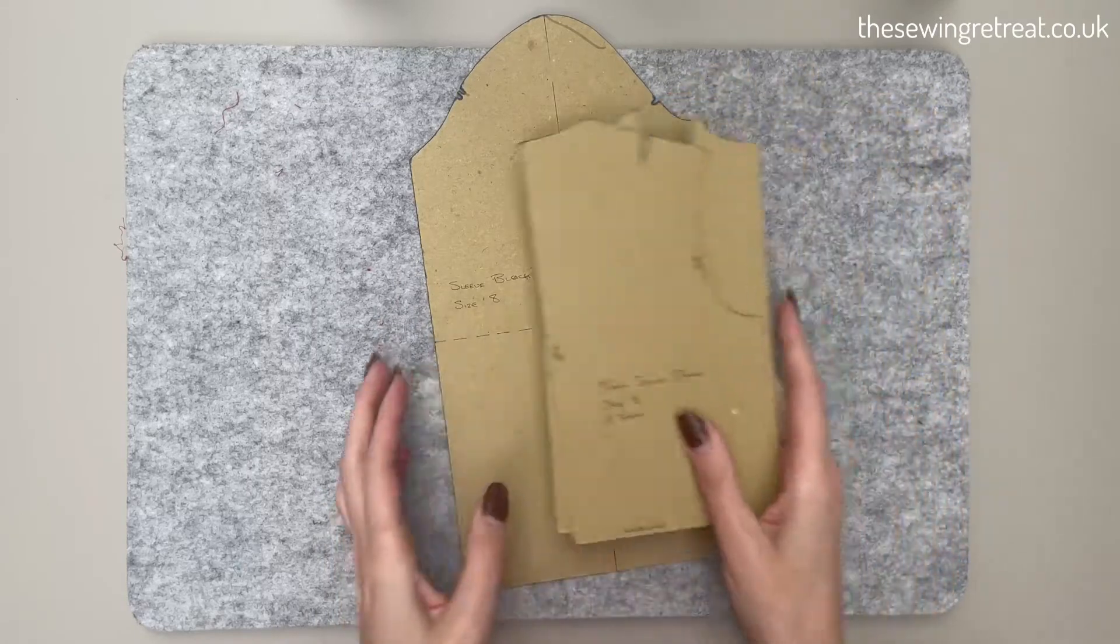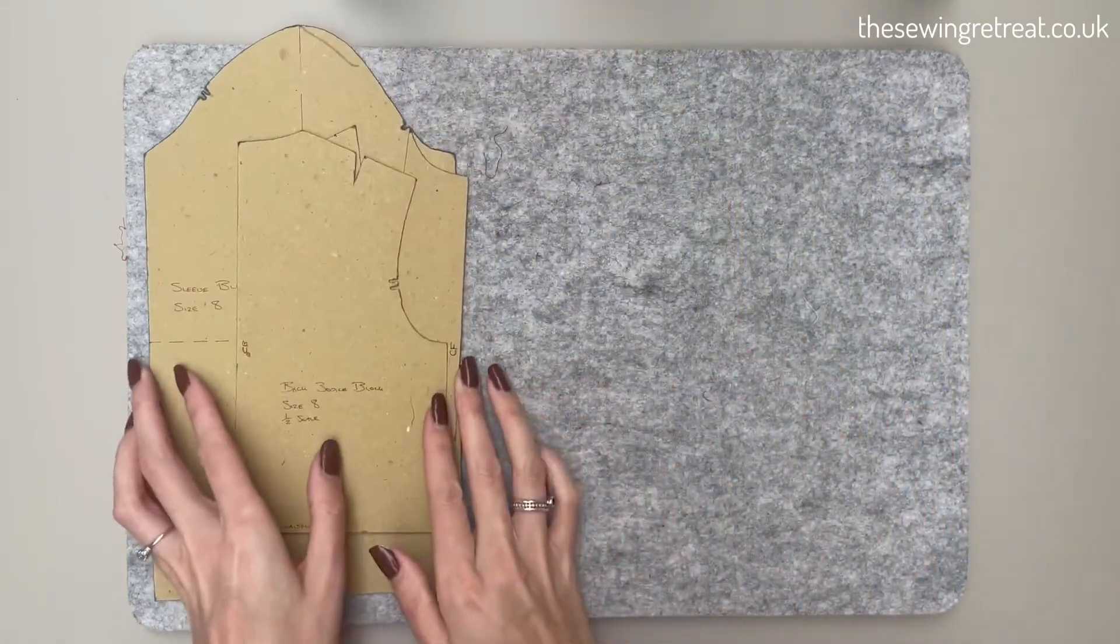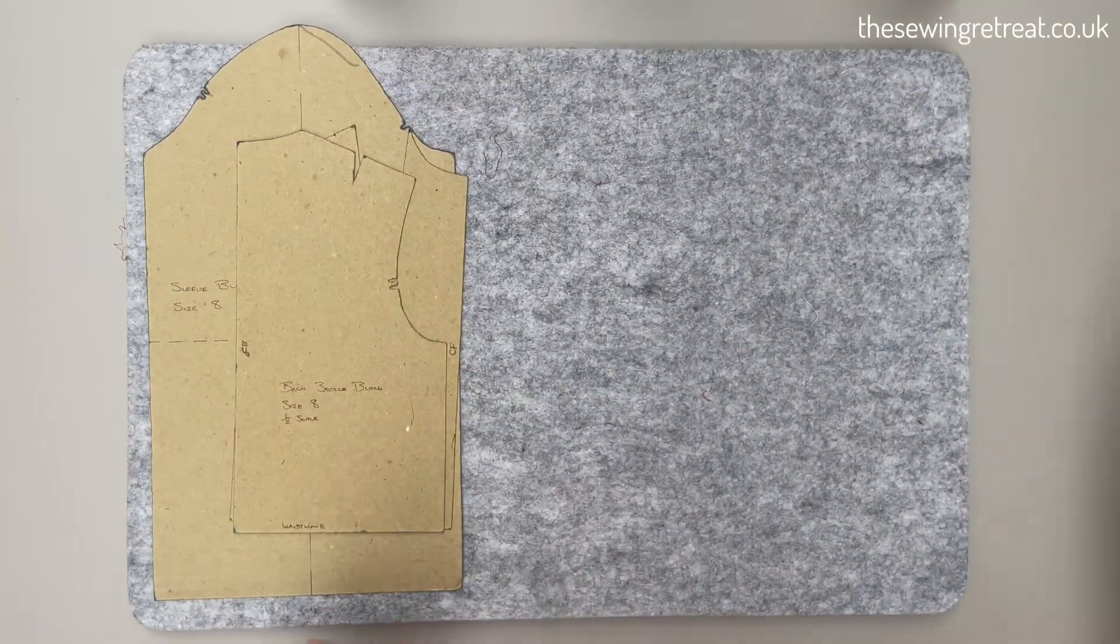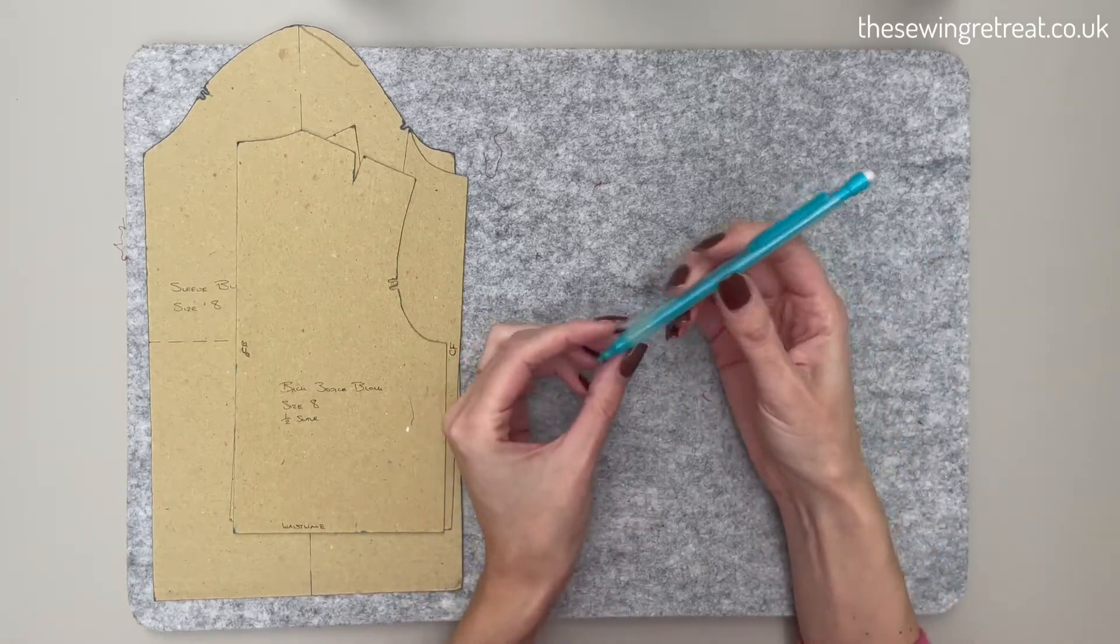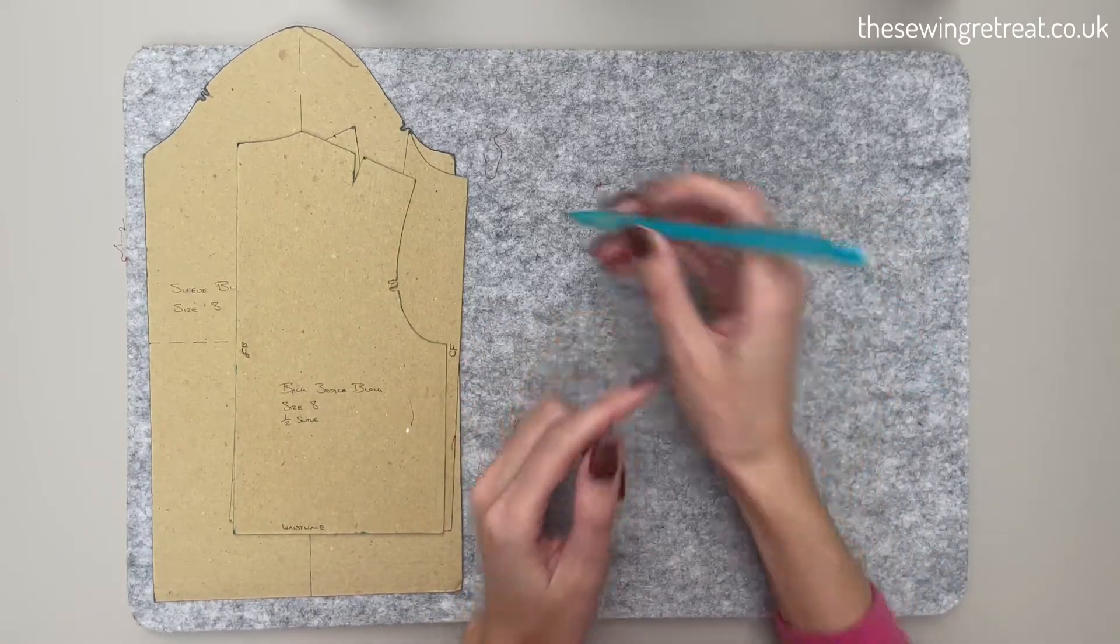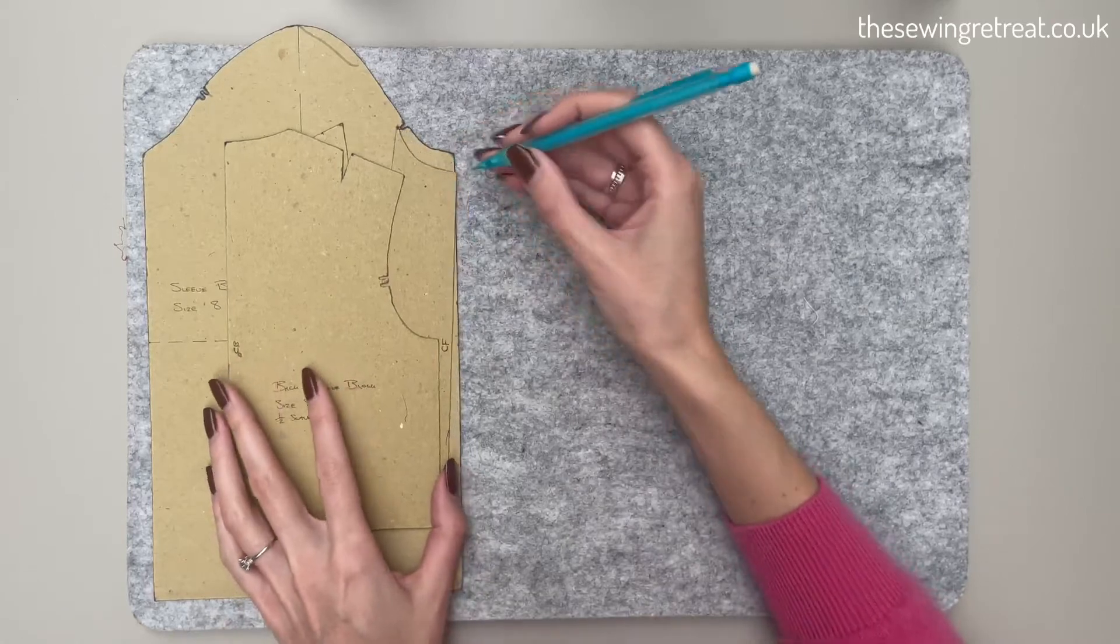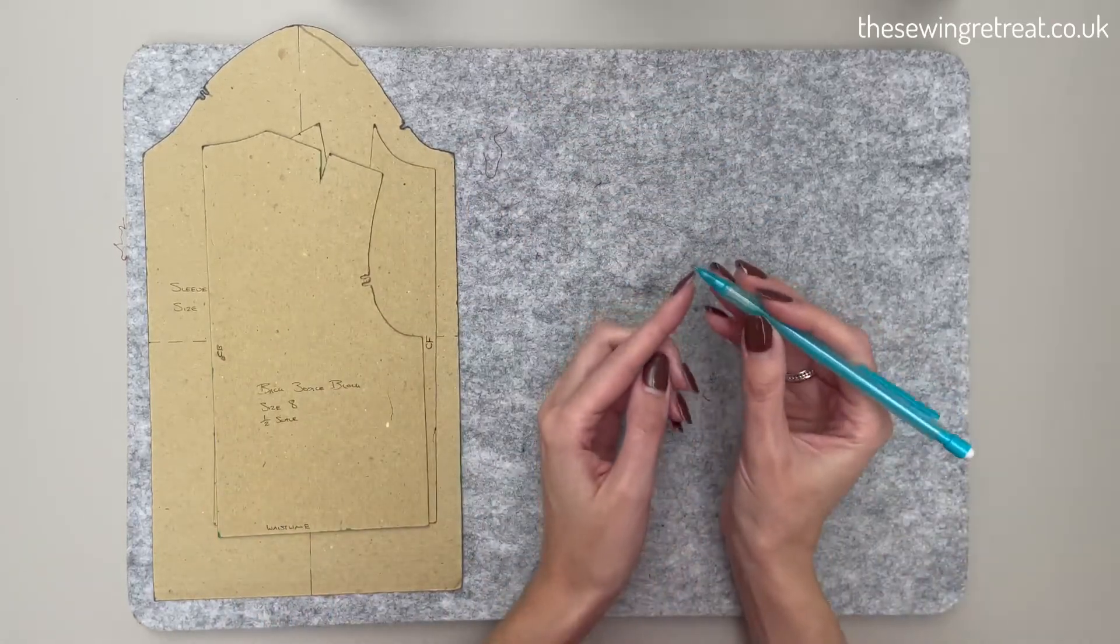The next thing you want is a mechanical or propelling pencil. This means you can really accurately draw around your pattern blocks onto your pattern paper because your lead won't blunt, and you've got an eraser to rub out any bits you don't need.